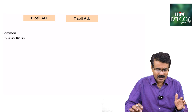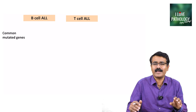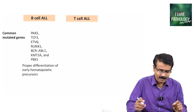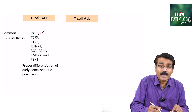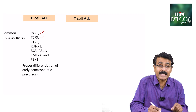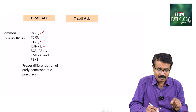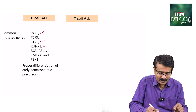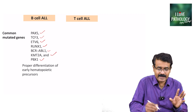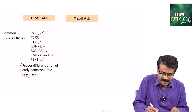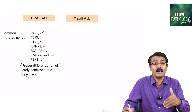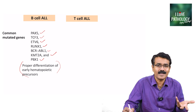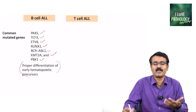Let us see what are the common mutated genes involved in B cell ALL and T cell ALL. For B cell ALL, the genes involved are PAX5, TCF3, ETV6, RUNX1, BCR-ABL1 (the Philadelphia chromosome we learned about in chronic myeloid leukemia), KMT2A, and PBX1. These genes help in proper differentiation of early hematopoietic precursors. Whenever any of these genes are mutated, it results in maturation arrest — that is how acute lymphoblastic leukemia occurs.